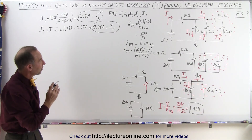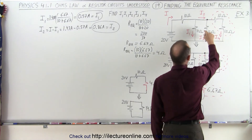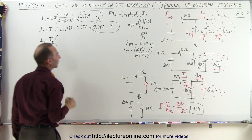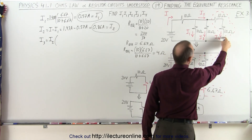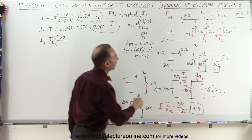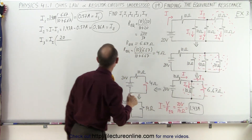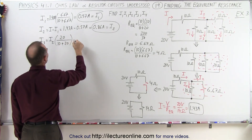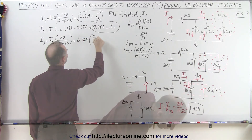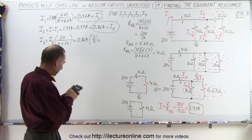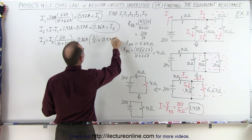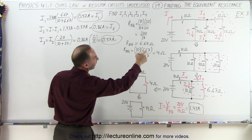Continuing, we still need to find I3 and I4. I3 and I4 together should add up to I2. To find I3, we take I2 and multiply it by the ratio of the resistance of the other branch — 20 ohms — divided by the sum of both branches, which is 10 plus 20 equals 30 ohms. So I2 times 20 over 30 is 0.86 amps times 2/3, giving us 0.57 amps flowing through the branch with current I3.